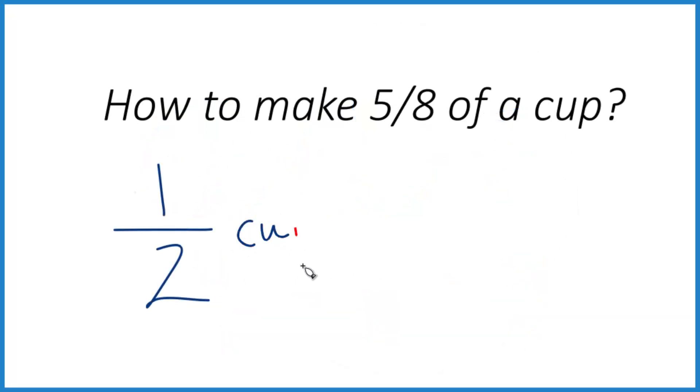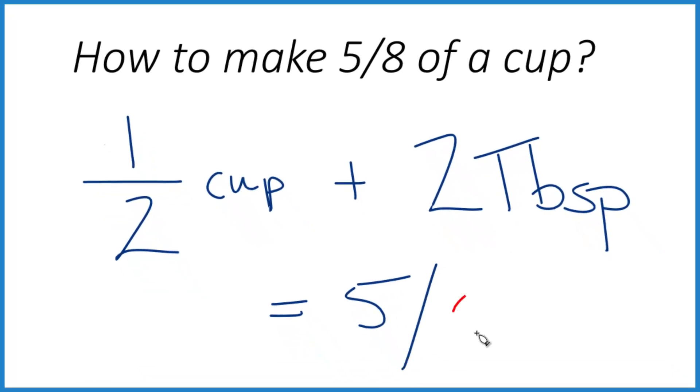You can take 1/2 of a cup plus 2 tablespoons. Those are the big ones and that will equal 5/8 of a cup. That's because there are 16 tablespoons in 1 cup. So 2 tablespoons is 2/16 or 1/8 of a cup.